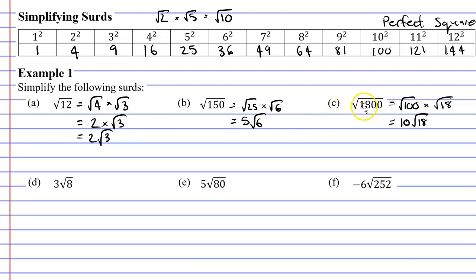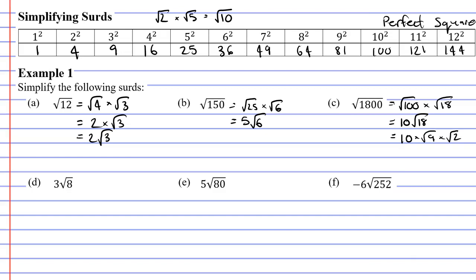Some people might feel they've simplified because they've reduced the number under the radical from 1,800 to 18. But have we reduced it to the smallest number possible? Are there two numbers that multiply to make 18 where one is a perfect square? Yes — 9 goes into 18 twice. So we rewrite as the square root of 9 times the square root of 2, because 9 times 2 is 18.